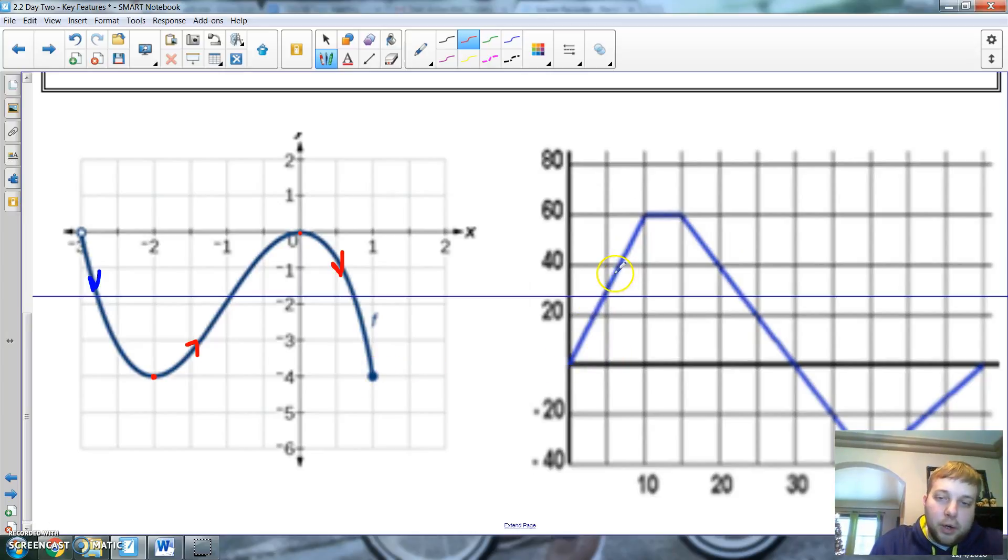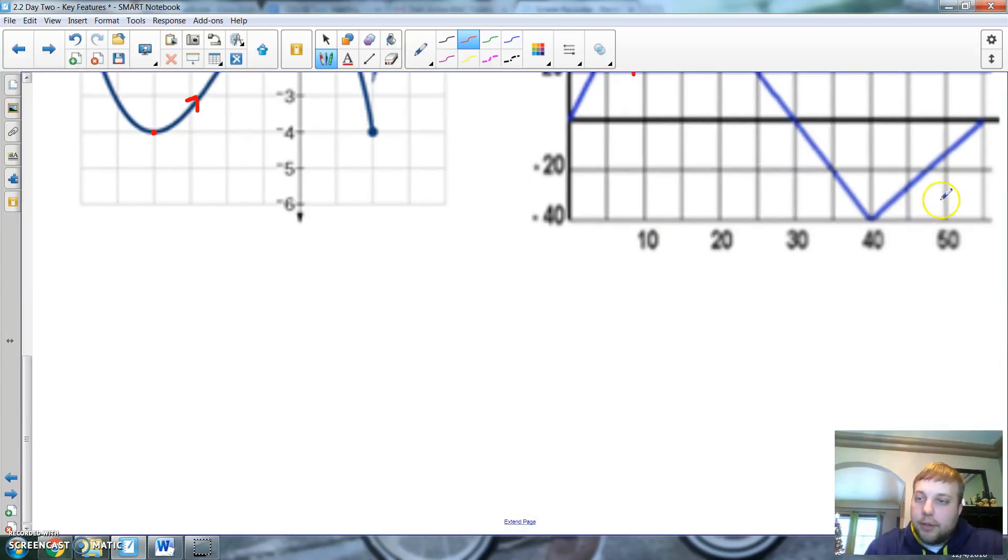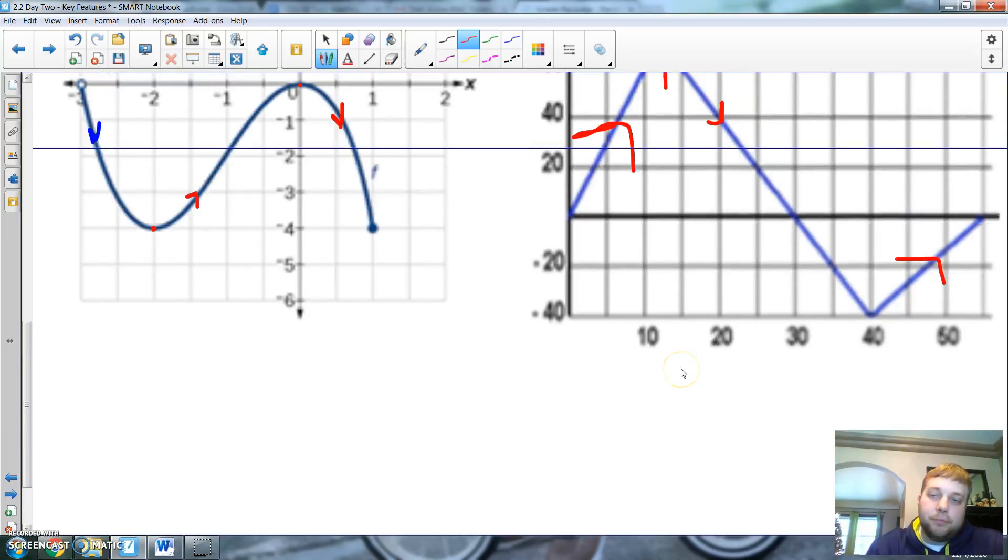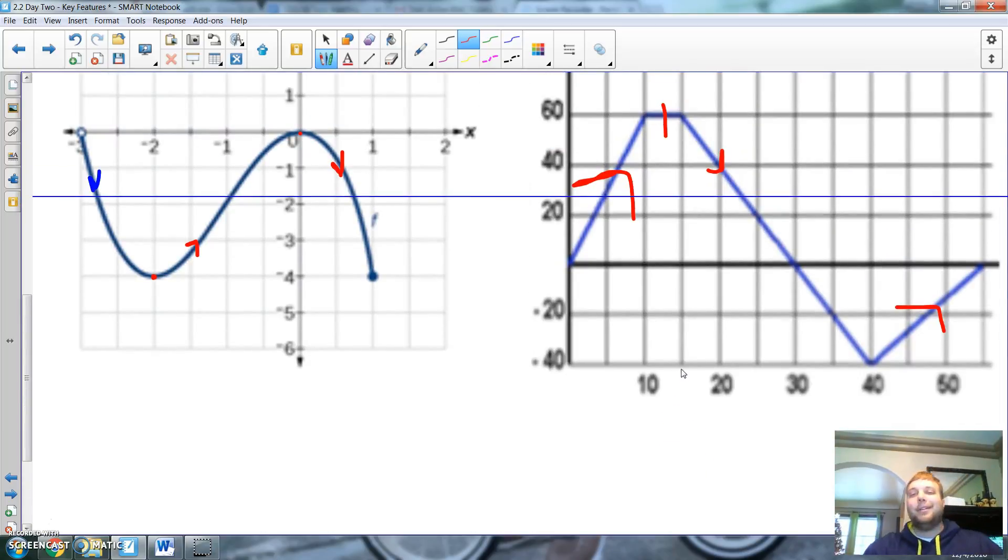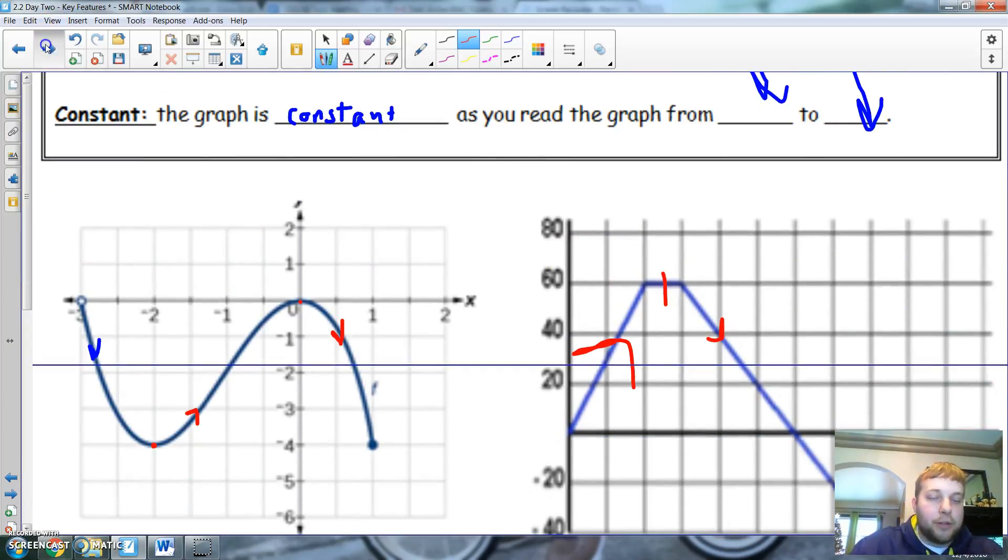Here, we are increasing until we reach a stagnant. And this is constant. So, it's staying the same. Nothing's changing. Then, we are going to be going down, decreasing. And then, we go increasing manner. Not too shabby, is it? Not too shabby at all. Increasing, decreasing. Pretty good.